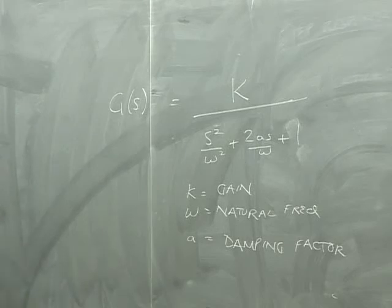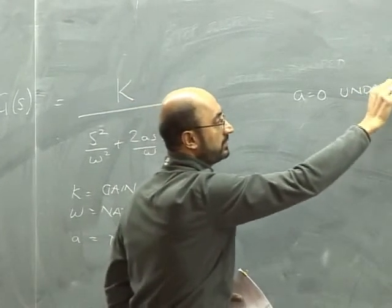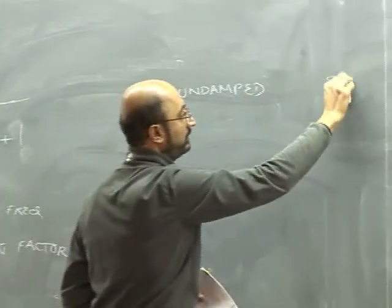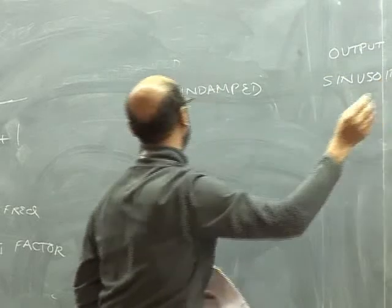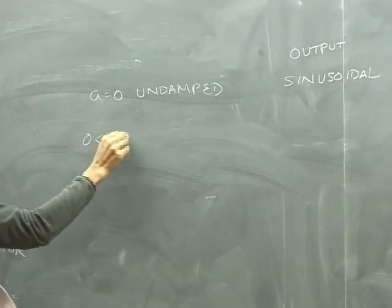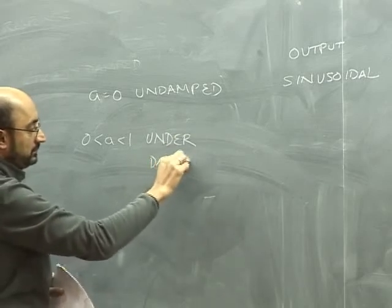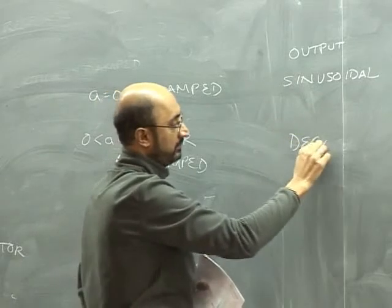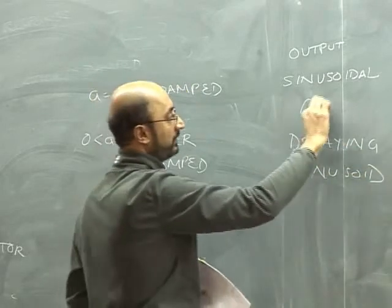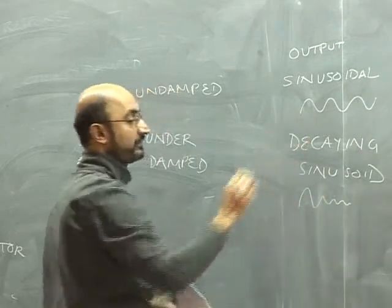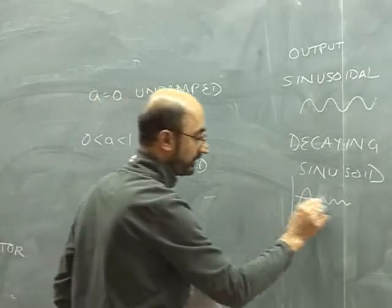We study four cases for the damping factor. When A equals 0, we call it undamped, and the output is a sinusoidal oscillation. When 0 is less than A is less than 1, we call it underdamped, and the output is a decaying sinusoid. This is offset by K because the gain is K, so we're going to asymptotically reach K - it's going to be a decaying sinusoid at the level of K.